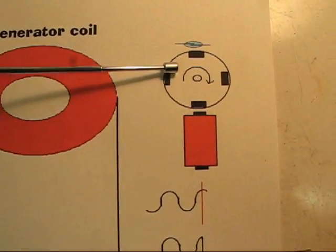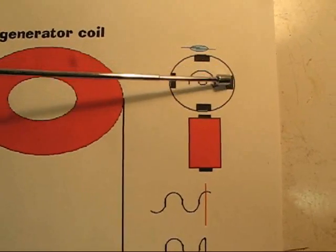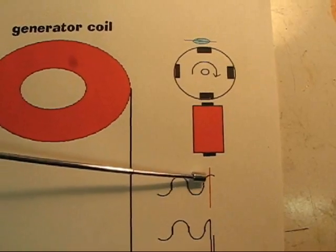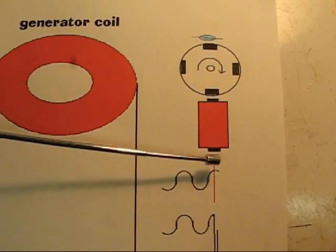So you have your rotor with your magnets on it, and as it rotates by your coil, you're going to be getting this induced potential voltage in a sine wave type of form.